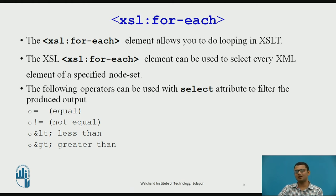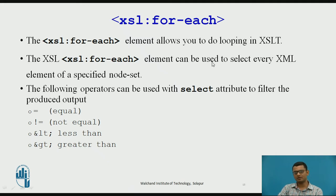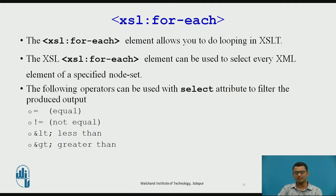The next element is for-each. We use the for-each element to apply looping in XSLT when we want to process all the nodes. For each node or each element, whenever looping is needed, we use the for-each element. We also use relational operators in association with the for-each element. These operators can be used with the select attribute to filter the produced output when using the for-each element.